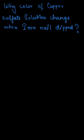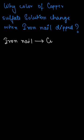Hello students, today we have a question asking why the color of copper sulfate solution changes whenever an iron nail is dipped into the solution. To solve this question, you must understand that whenever the iron nail is dipped in copper sulfate, written as CuSO₄ aqueous, something important happens.